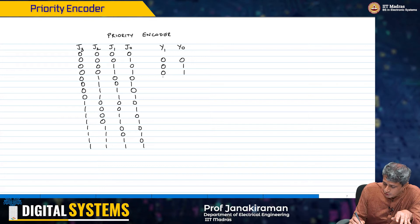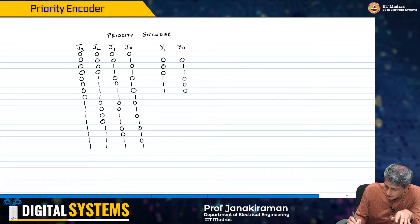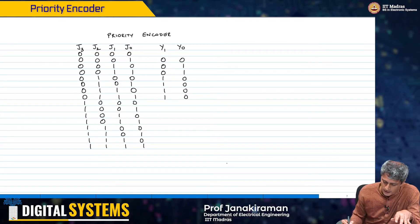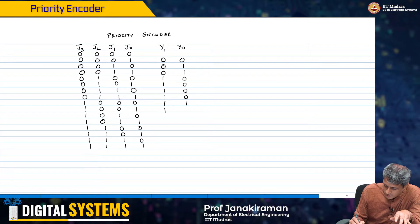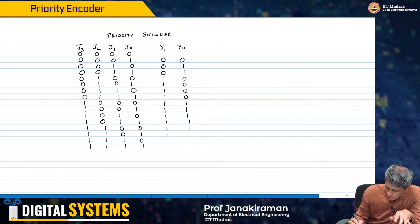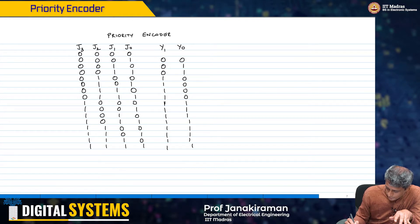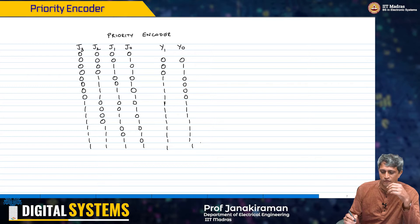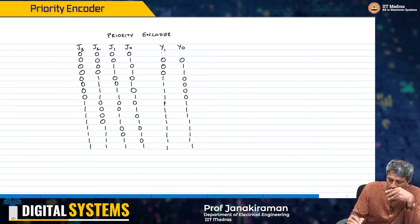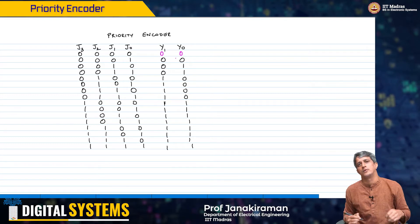From here on, the priority goes to j2, so the output is 1,0. And from here on, it simply goes to j3, giving output 1,1. And in the previous case, we had said that for this case we would just make the outputs as 0,0.